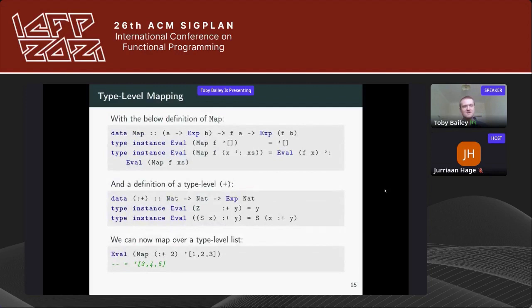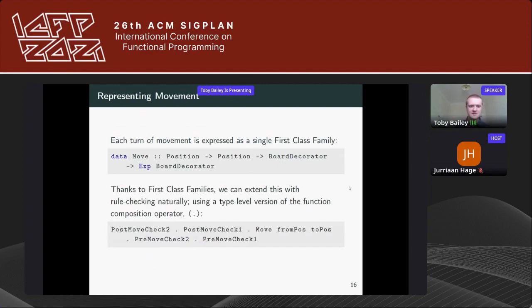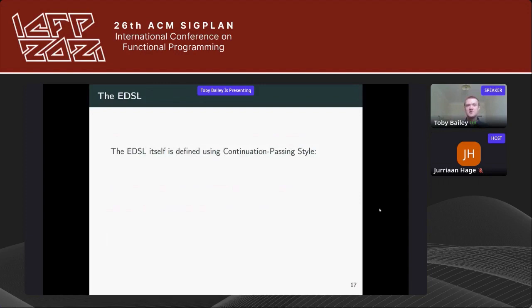With a definition of Map and a type-level Plus, we can now map over lists at the type level. In ChessKal, each turn of movement is expressed as a first-class family: origin position, destination position, current board state, returning the new board state. Thanks to first-class families, we can extend this with rule-checking using a type-level version of function composition — from right to left: pre-move checks, the move itself, then post-move checks.